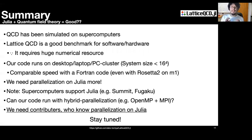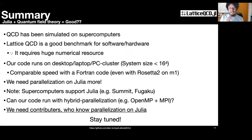Let me summarize. QCD has been simulated on supercomputers. Lattice QCD is a good benchmark for software and hardware because it requires huge numerical resources. Our code runs on desktop, laptop, PC, and cluster, with system sizes up to 16 to the fourth practically. It achieves compatible speed with Fortran code, even with Rosetta 2 on the M1 chip. We need better parallelization in Julia — can our code support hybrid parallelization like OpenMP plus MPI? This is an open question. We welcome contributors — especially anyone who knows parallelization in Julia. Thank you very much.